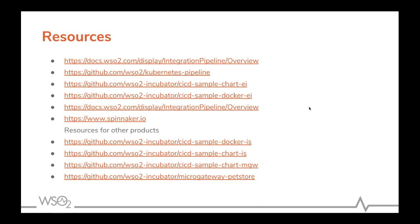Another question: how to apply truststore and keystore changes. You can use the Docker file in the artifact source repository to burn the truststore or keystore into the customized image and use that for deployment. There is also a question on whether the number of environments can be changed — that is possible. In the pipeline source repository, you can edit and configure it to remove or add new environments by modifying the pipeline.